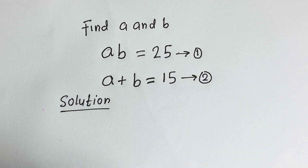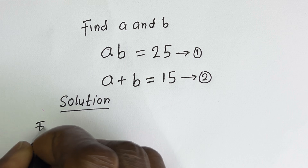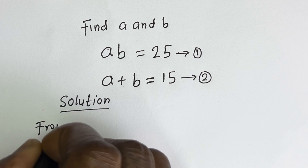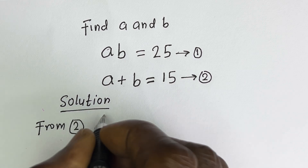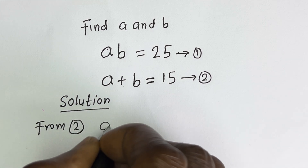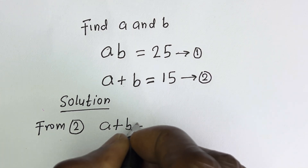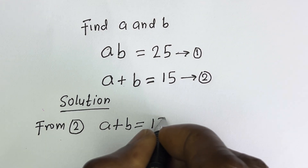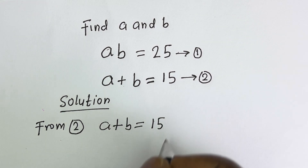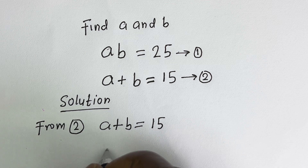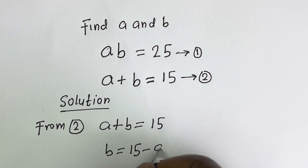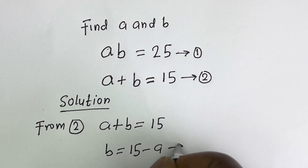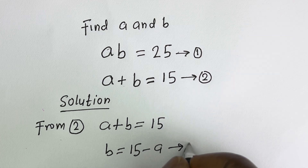From equation 2, a plus b is equal to 15, then b is equal to 15 minus a. Let's call this equation 3.